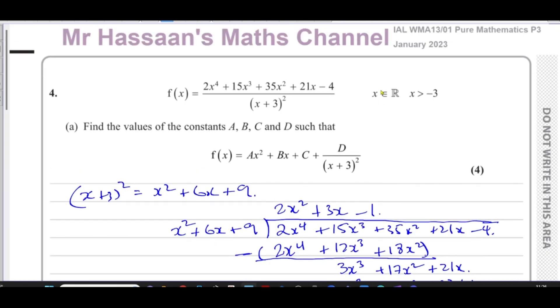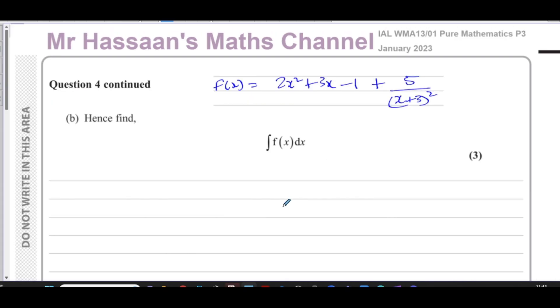For part b, they told us to find the integral of f(x). So we have already simplified this in such a way that we have separated it out into separate terms. Just this last term I have to write it as to the power of negative 2 like this so that I can get it ready for integration.